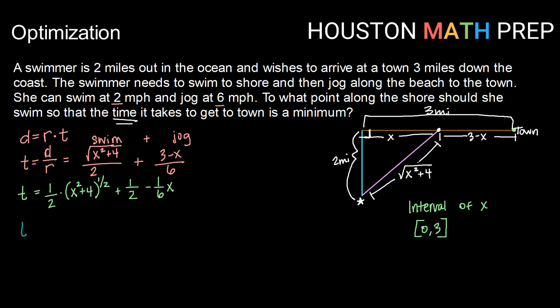So my derivative t prime would be, using my chain rule here, one-half times one-half is one-fourth times x squared plus four to the negative one-half power times the derivative of x squared plus four, or two x, plus my derivative for one-half is zero, minus derivative of one-sixth x is one-sixth.